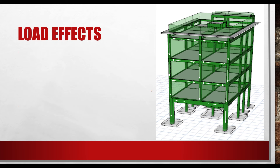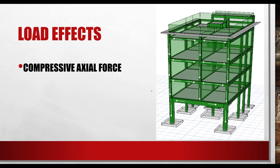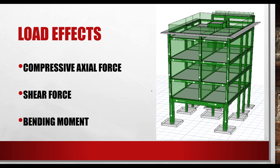Now let's talk about the loading effects that these loads impose on columns. For columns, we have three major loading effects. The first is the axial compressive load — from self-weight, loads from other columns, and in some cases loads from beams. The second is shear force. The third is bending moment, which is usually caused by the supporting beams transferring both axial forces and bending moment to the column.